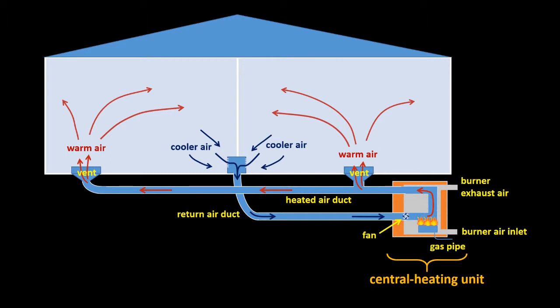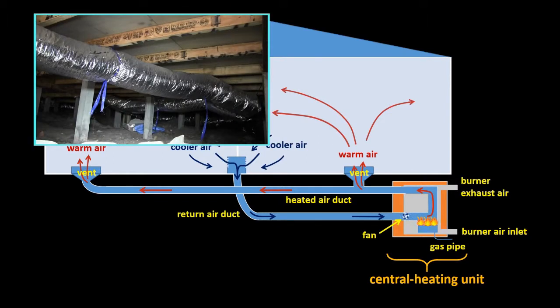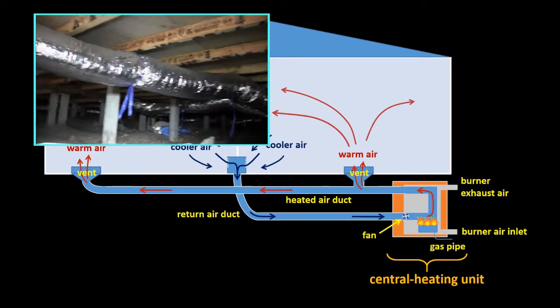The convection currents carry the heat energy of the fire in the one and only central heating unit through the air ducts to as many rooms as you want. The air ducts are insulated of course to stop the heat escaping.